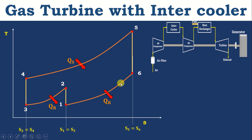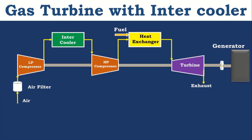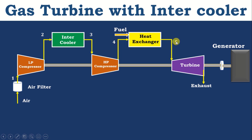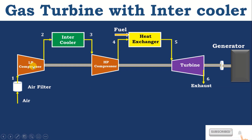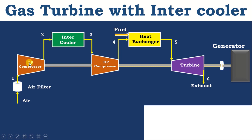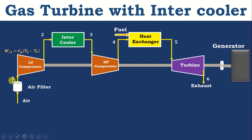Now we will discuss how to derive the efficiency of gas turbine with intercooler. We know that the compressor, intercooler, HP compressor, combustion chamber, and turbine are open systems. So we implement the steady flow energy equation to derive the work input, heat input, heat rejection, or work output. The LP compressor is placed between points 1 and 2. The compressor is a work-consuming device. Since it is isentropic compression, Q equals zero. So WC1 equals Cp times (T2 minus T1). The answer will be positive.